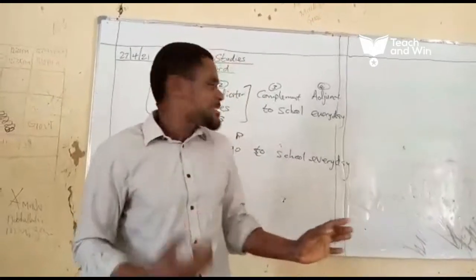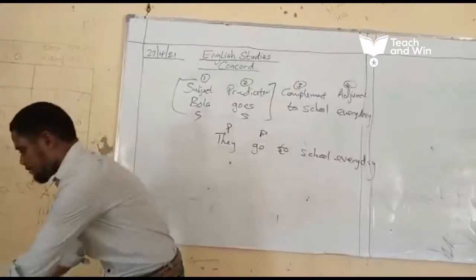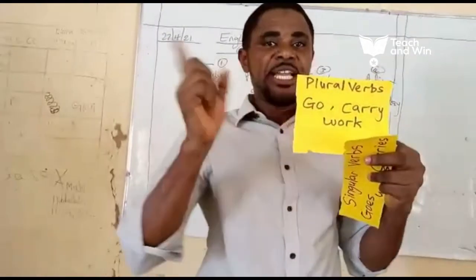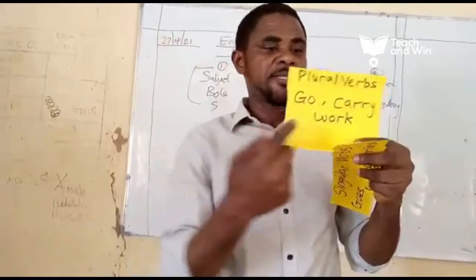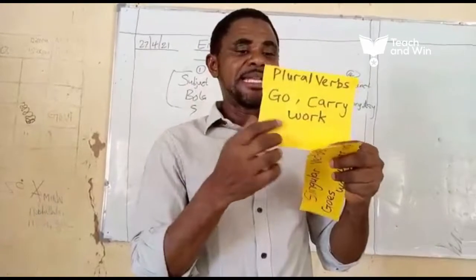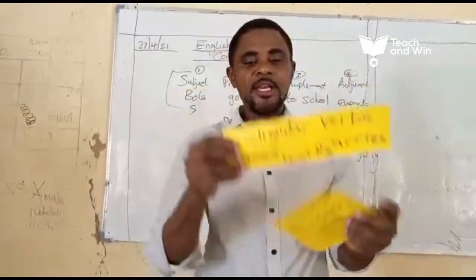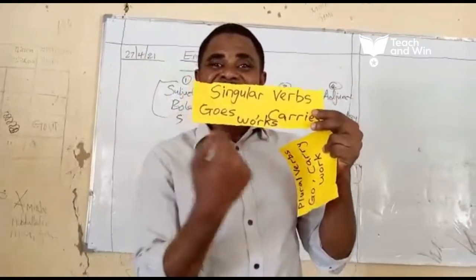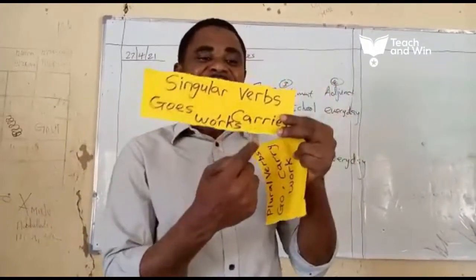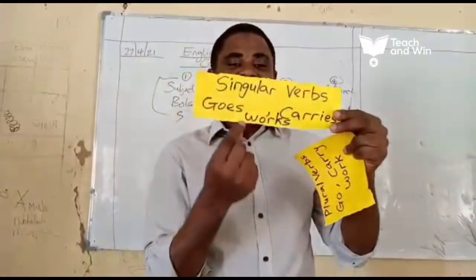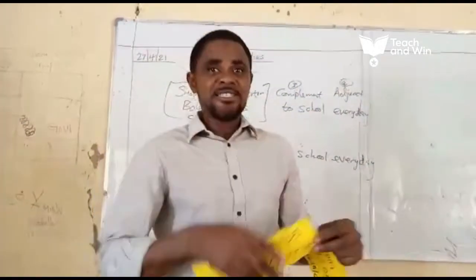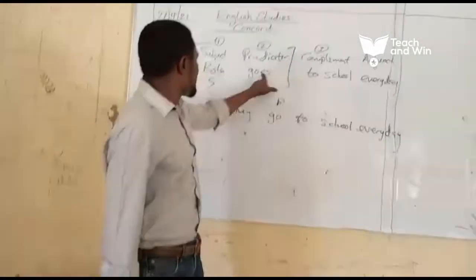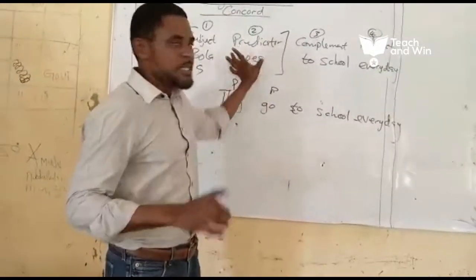A verb is singular when it attracts s, es, or ies. For example, this is a plural verb: go — it does not have es; carry — it does not have it; and work. Here, singular verbs: goes — it attracts es; carries — it attracts ies; then works — it attracts s. That's why we have goes here. Bala is singular, so goes is singular.